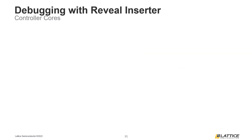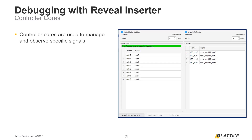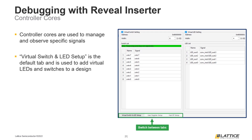The second type of debug core we are going to discuss are Controller cores. When a Controller core is added, the right side of the Reveal Inserter window should look like the figure on the slide. The Controller core setup window has three tabs, the first of which is called Virtual Switch and LED Setup.